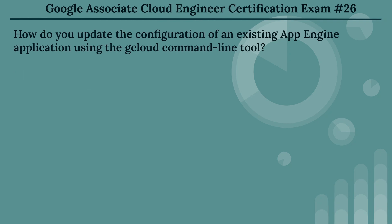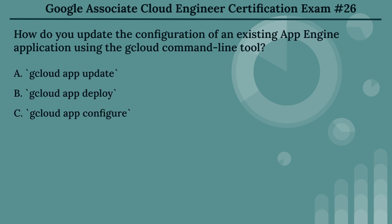The twenty-sixth question: how do you update the configuration of an existing App Engine application using the Cloud command line tool? The options are: Option A, gcloud app update. Option B, gcloud app deploy. Option C, gcloud app configure. Option D, gcloud update app.